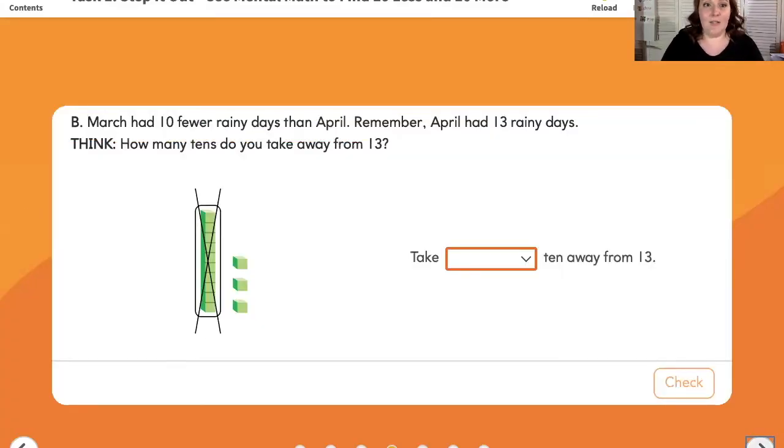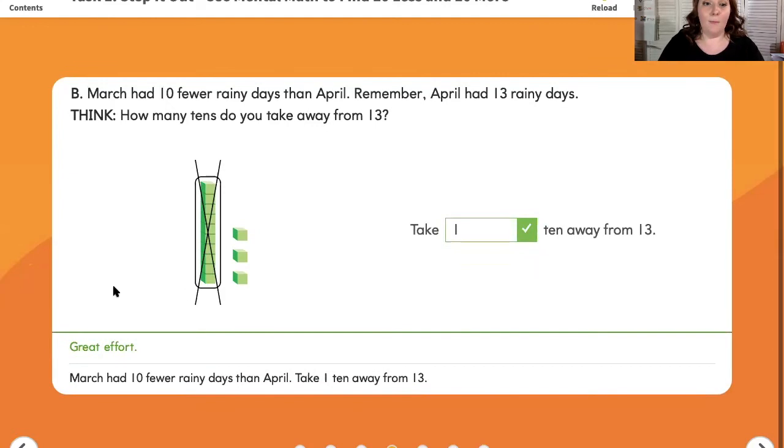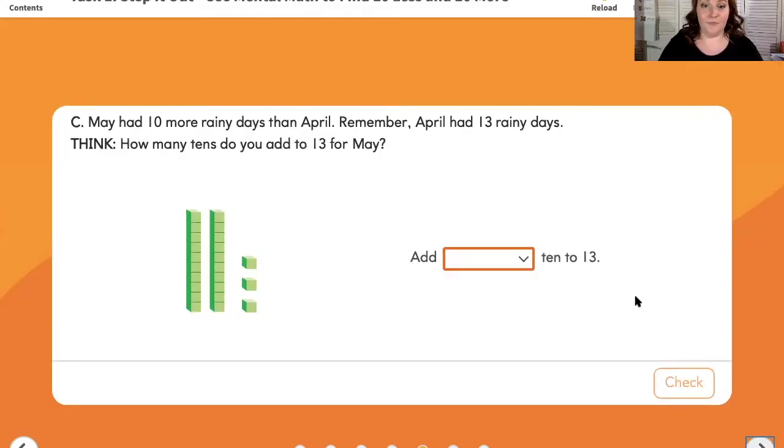Letter B says, March had 10 fewer rainy days than April. Remember, April had 13 rainy days. Think. How many 10s do you take away from 13? So in the picture here, they have a group of 10 circled and crossed out because we're taking that group of 10 away. So we're going to take one 10 away from 13. March had 10 fewer rainy days than April. So we take one 10 away from 13.